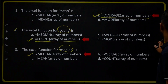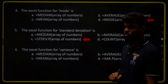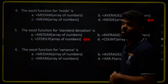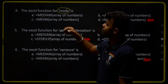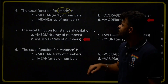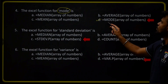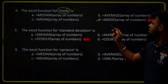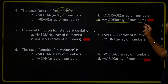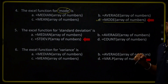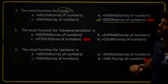Fourth question: the Excel function for mode — which formula do we apply for calculating mode? That is option D: =MODE(array of numbers). Option A has MEDIAN, option B has AVERAGE, option C has MEAN — we will not use those. We use =MODE(array of numbers). Therefore option D is the right answer.